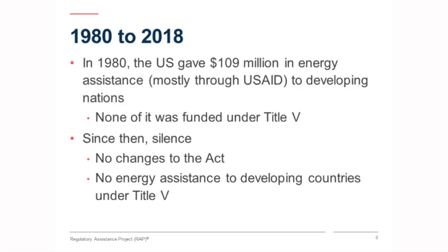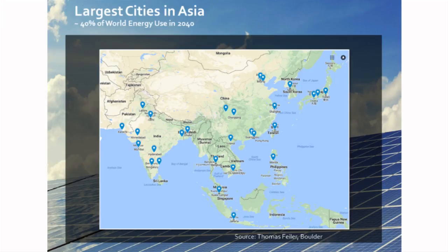Here's a map — done by a gentleman I've worked with, Tom Feiler, who's in Boulder and was with RMI for a while. Forty percent of the energy use in 2040 will be taken, globally, by the largest cities in Asia. And pretty much all of those cities, except for Singapore and those in Japan, are in what we call developing countries.